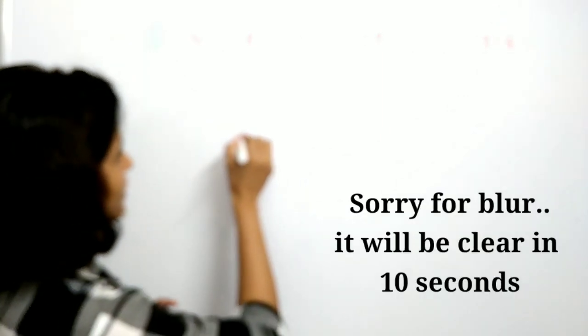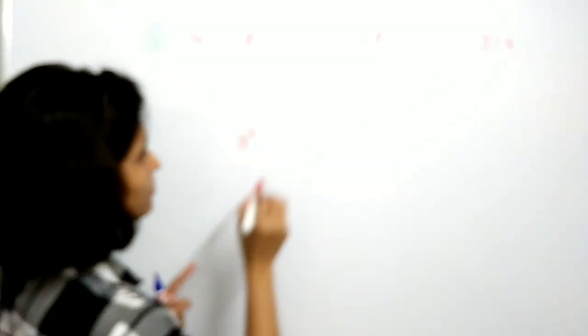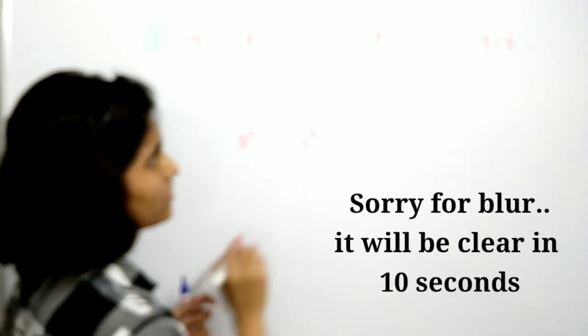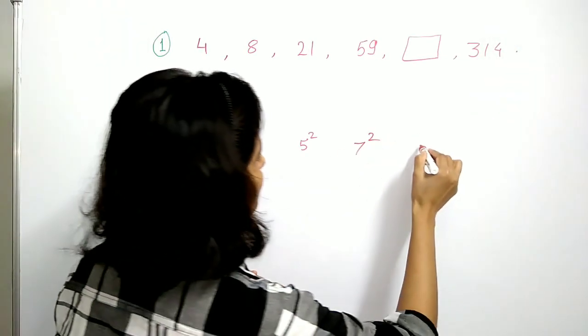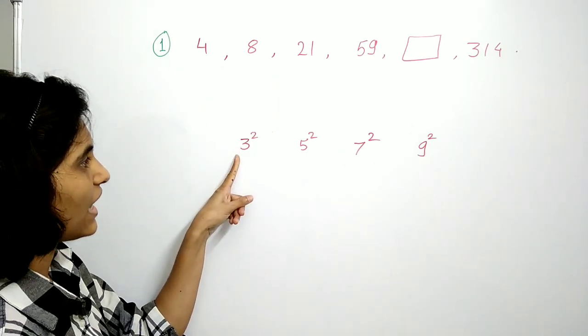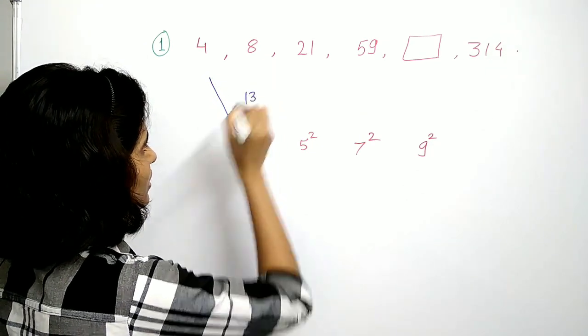You start with 3 squared. Now the next odd number is 5, so take 5 squared. Next odd number is 7, so take 7 squared. Next odd number is 9, so take 9 squared. Now the next step is you add this 4 to this 9, which is 3 squared, so that's 13.